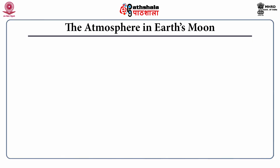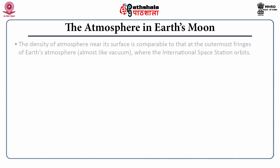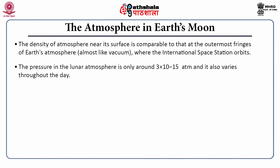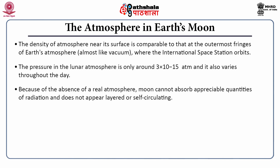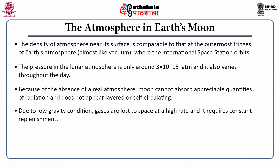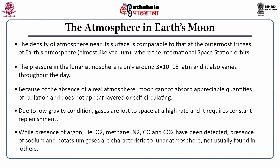Now let us discuss the atmosphere on Earth's moon. The density of atmosphere on the moon's surface is comparable to that of the outermost fringes of Earth's atmosphere. For practical purposes, it can be considered a vacuum. The pressure in the lunar atmosphere is only around 3×10⁻¹⁵ atmospheres, and it varies throughout the day. Because of the absence of a real atmosphere, the moon cannot absorb appreciable quantities of radiation and does not appear layered or self-circulating. Due to low gravity, gases are lost to space at a high rate and require continuous replenishment. One typical feature of the moon's atmosphere is the presence of sodium and potassium gases.